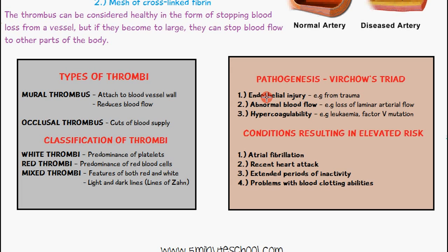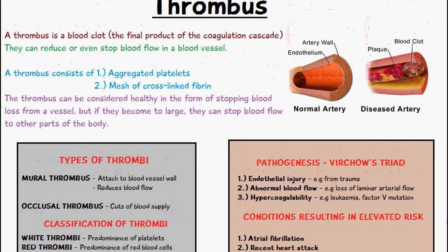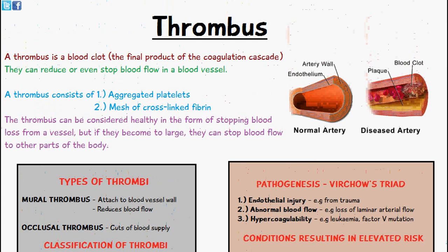Conditions which result in an elevated risk include atrial fibrillation, recent heart attacks, extended periods of inactivity, and problems with blood clotting abilities. The diagram shown here illustrates what a thrombus actually looks like — in this case it is an occlusal thrombus, because it is completely cutting off any further blood supply.